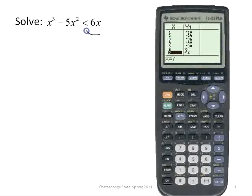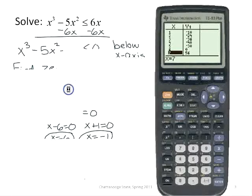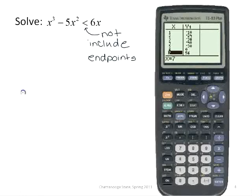Now, this is the same problem except this one does not include the equal portion of the inequality symbol. So that means I do not want to include my endpoints. The rest of the function is exactly the same. My solution here will be the same intervals except this time I will have the parentheses at the endpoints instead of the brackets.